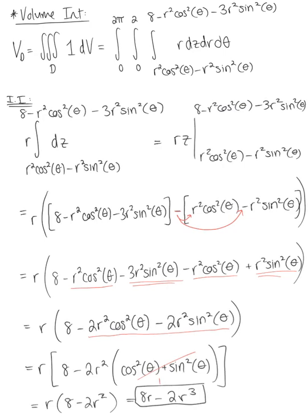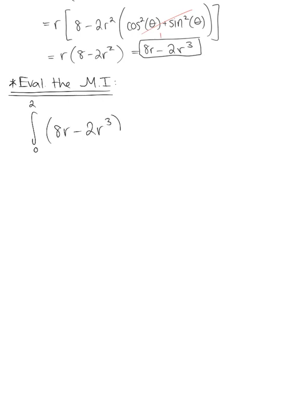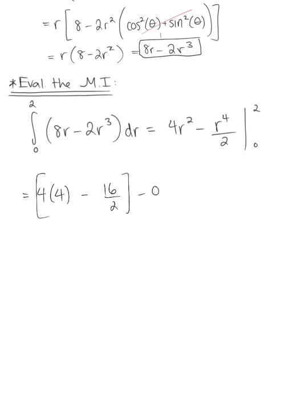Now we evaluate the middle integral with respect to r. The integral from 0 to 2 of (8r - 2r³) dr integrates to 4r² - r⁴/2, evaluated from 0 to 2. Substituting: 4(4) - 16/2 = 16 - 8 = 8.